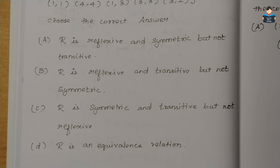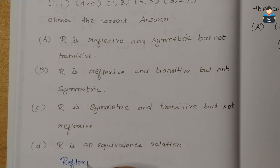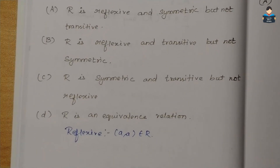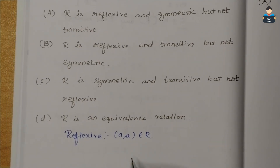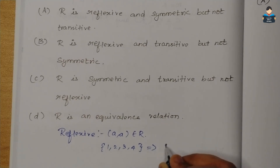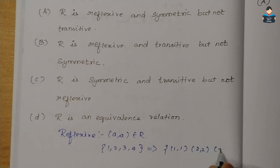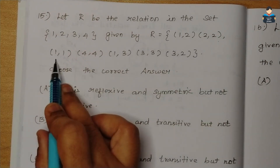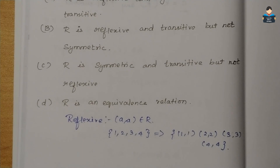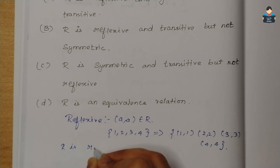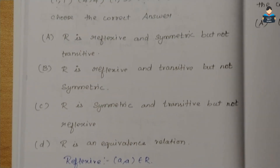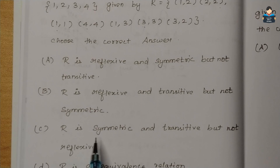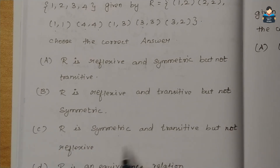For reflexive, (a, a) must belong to R for all a in the set. Checking: (1,1), (2,2), (3,3), (4,4) — these are all present in R. So R is reflexive. But the answer options say R is symmetric and transitive but not reflexive — let's verify.